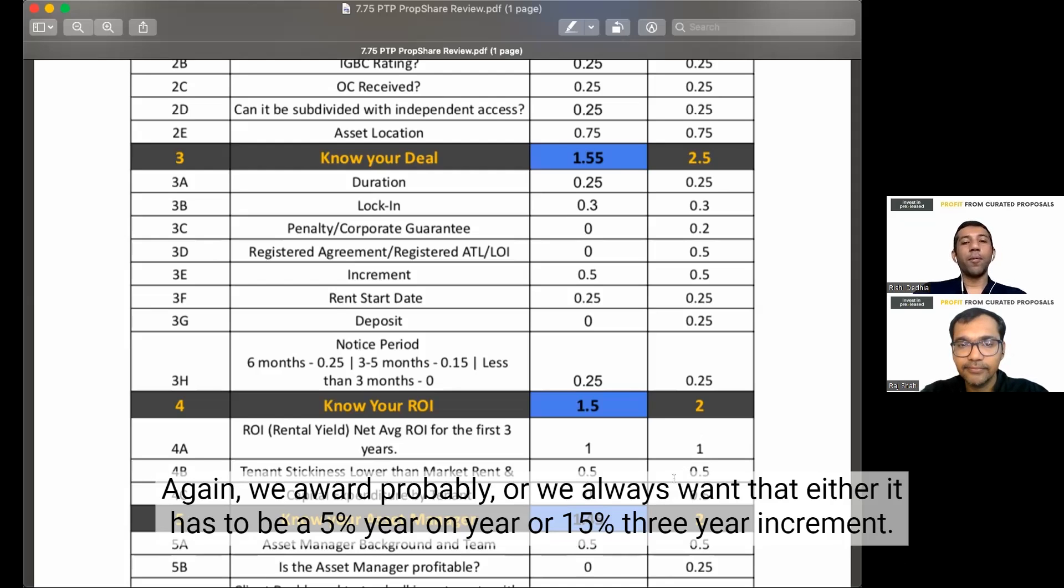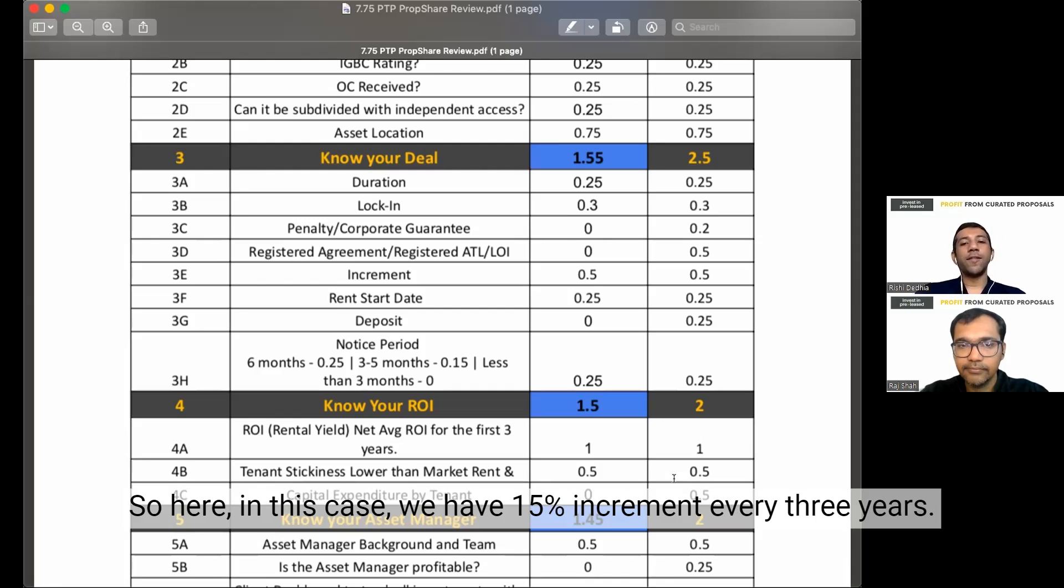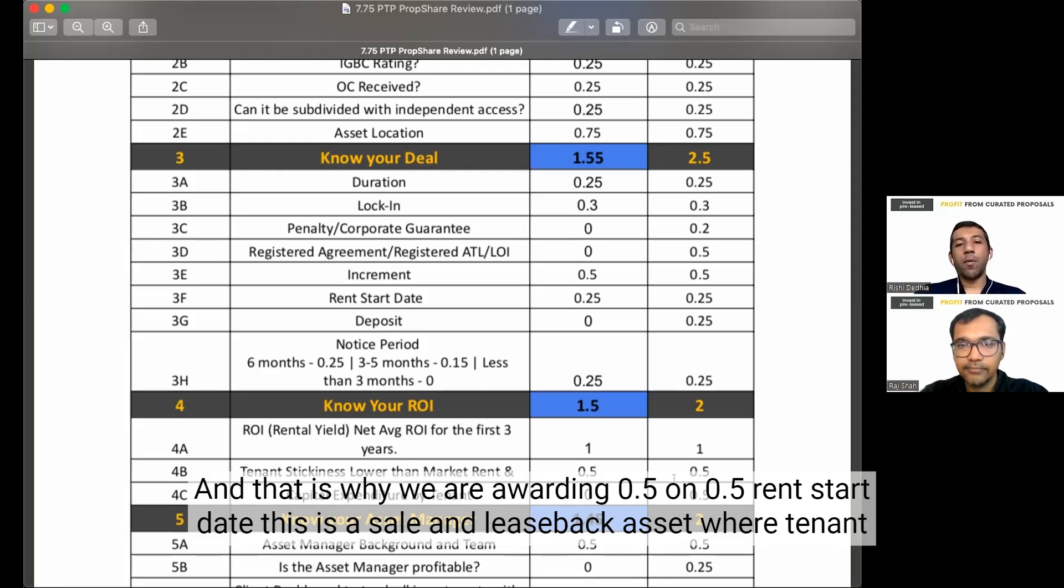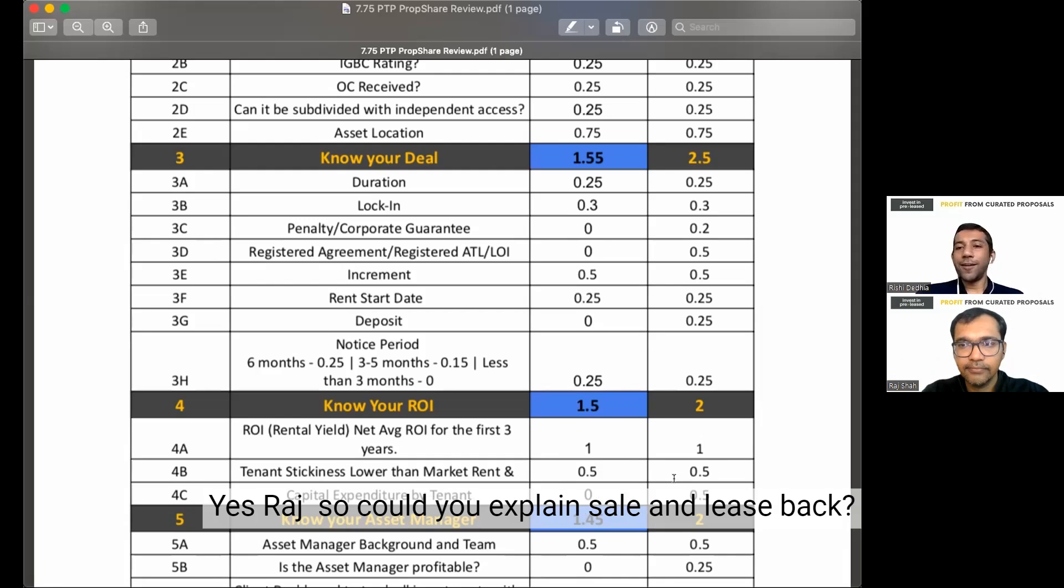In terms of the increment? Yeah, again, we award probably or we always want that either it has to be a 5% year-on-year or a 15% three-year increment that should be in place. That's what we call standard in terms of the market. So here in this case, we have 15% increment every three years. And that is where we are awarding 0.5 on 0.5. And start date, this is a sale and leaseback asset where a tenant is already occupying the moment. The commitment is fulfilled. The documentation is in process. The rent will start.